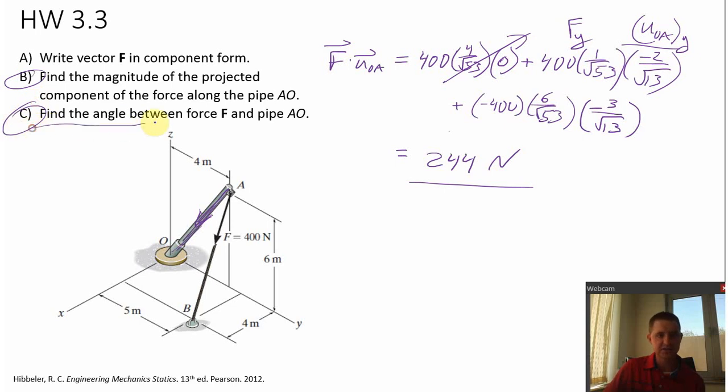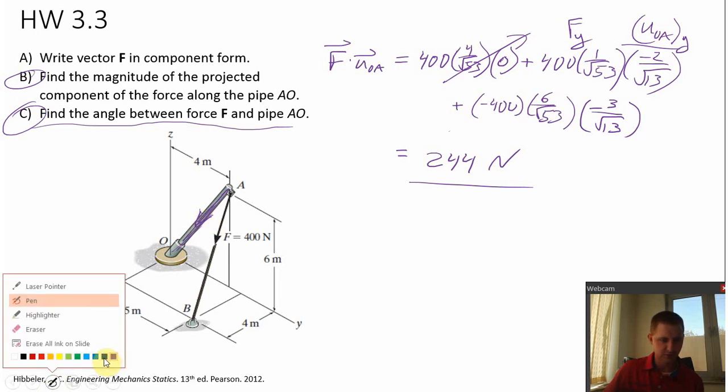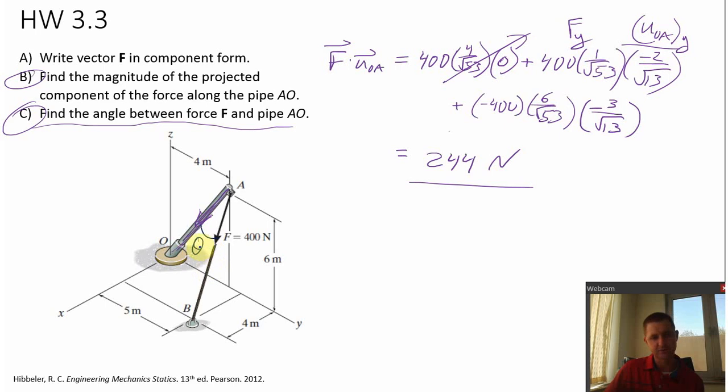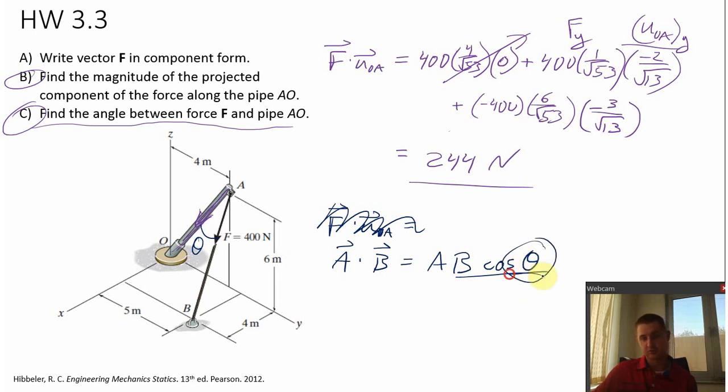Now how about part C? Part C asks to find the angle between the force vector F and the pipe AO. So they're actually looking for this vector here. What is that angle theta? So we can also use a dot product to do the same thing. Another way to calculate a dot product, is to actually take the magnitude of one vector. Let me just write it like this. So let's say I want to take A dot B. Another way to calculate that is to take the magnitude of A times the magnitude of B times the cosine of the angle in between the vectors. And this is what we're looking for. We're looking for the angle in between the force vector F and the unit vector that goes from A to O.